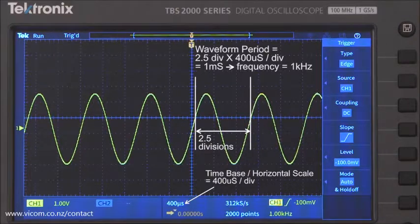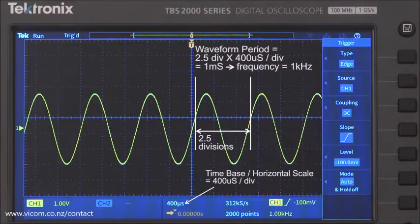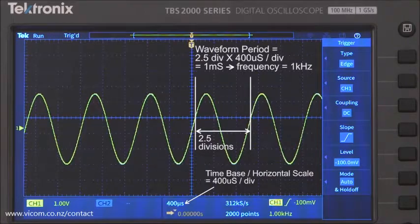And once you have the period, you can calculate the frequency because it's the inverse of the period. In this case, the math is pretty easy again. A one millisecond period translates to a frequency of 1 kHz.